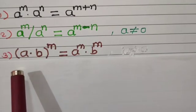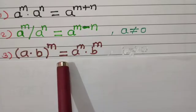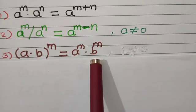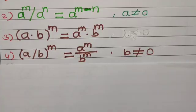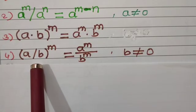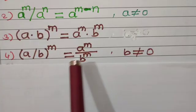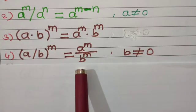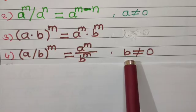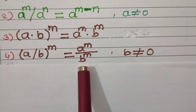Property number 3: (a into b) to the power m is equal to a to the power m multiplied by b to the power m. Property number 4: (a upon b) to the power m can be written as a to the power m divided by b to the power m, assuming b is not equal to 0, because b appears in the denominator.